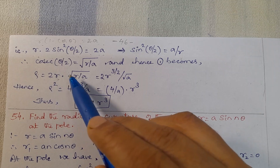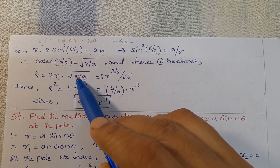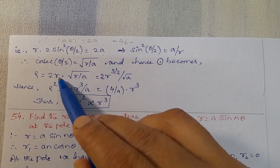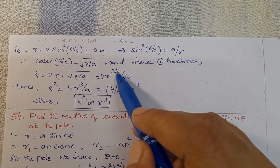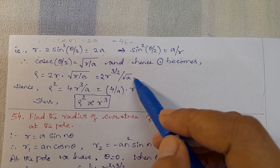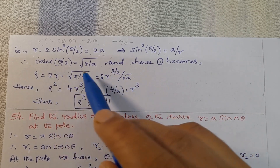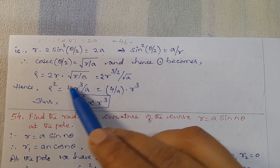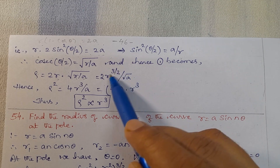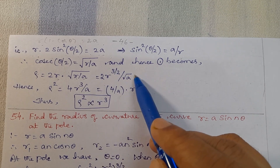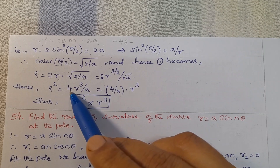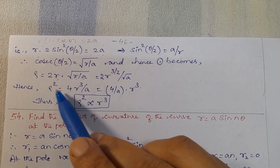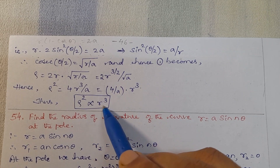ρ = 2r × cosec(θ/2) = 2r × √(r/a). So r × √r = r^(3/2), giving ρ = 2r^(3/2)/√a. Squaring both sides: ρ² = 4r³/a. Since 4/a is constant, ρ² is proportional to r³. Hence proved.